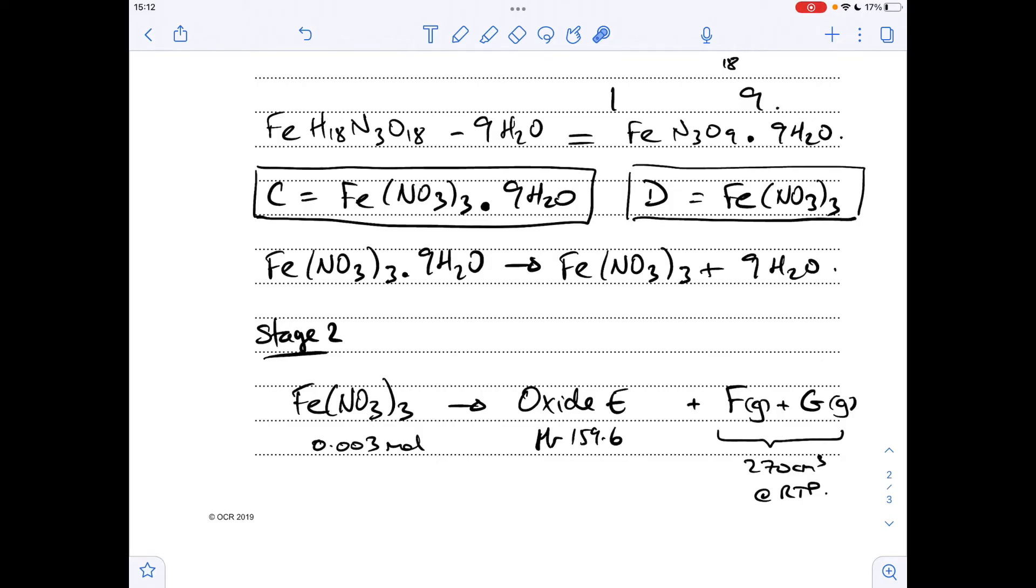So moving on to stage two now, you can see I've done a similar thing, summarizing that information in an equation. We've got that many moles of D, heated strongly, makes this oxide of E. So it's going to be some form of iron oxide. It's got the MR of 159.6, and we'll get this gaseous mixture with that volume at RTP. So I'm just going to focus on the formula of oxide E for now. We're just playing around with the MRs until we get this 159.6. And the answer for E comes out to be Fe2O3, iron 3 oxide. I'm going to worry about the equation once I know what these two gases are.